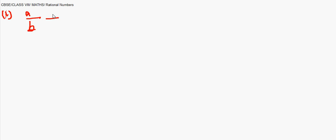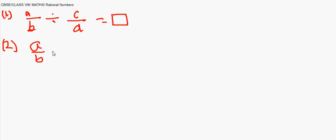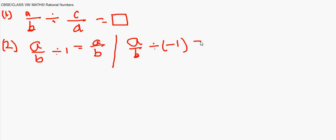If there are two rational numbers like a/b and c/d, then a/b divided by c/d is always a rational number — that's the closure property. Also, a/b divided by 1 gives the same rational number a/b, while a/b divided by -1 gives -a/b. Furthermore, a/b divided by a/b gives 1, and a/b divided by -a/b gives -1.